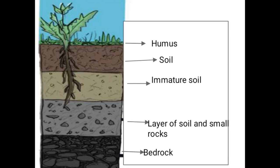The land below the humus layer is full of sand, soil, small stones, worms, and insects. Below this layer, the soil and pieces of bedrock are found. Further below, the soil is immature and the proportion of soil decreases while that of rock increases.